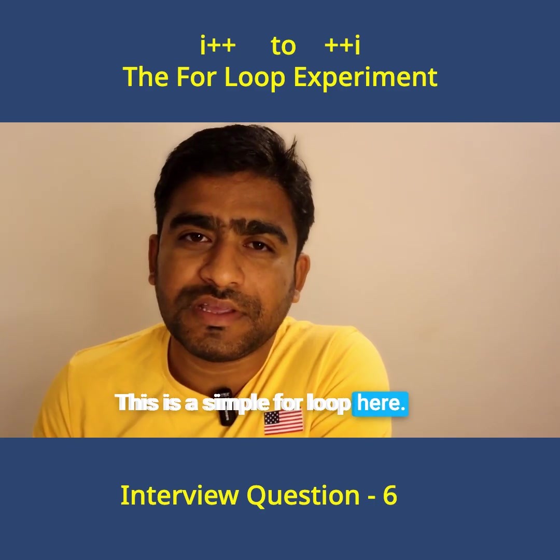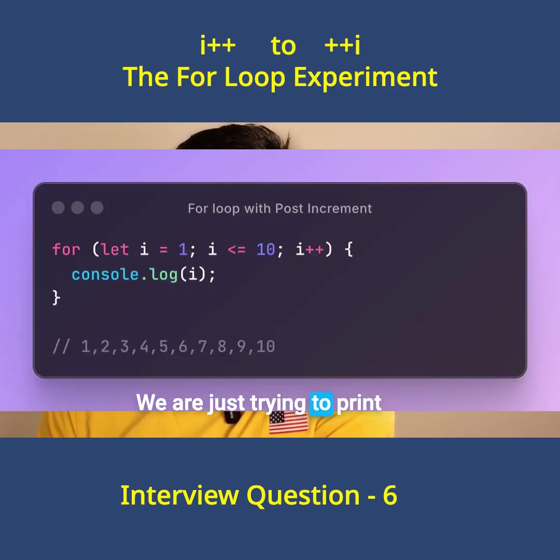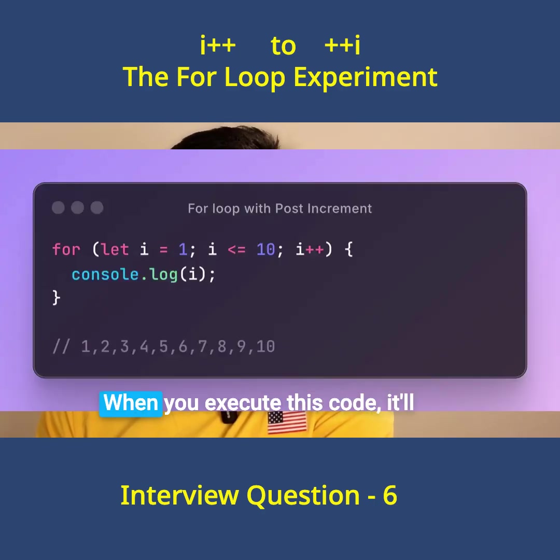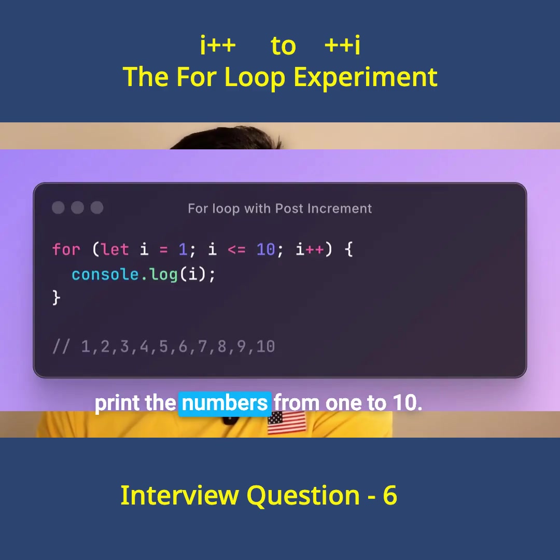This is a simple for loop. Here we are just trying to print the numbers from 1 to 10. When you execute this code, it will print the numbers from 1 to 10.